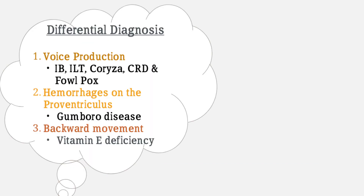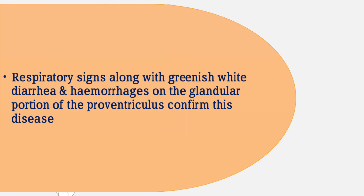Differential diagnosis: egg production drops also occur in infectious bronchitis, infectious laryngotracheitis, coryza, CRD, and fowl pox. Hemorrhages on the proventriculus may also occur in Gumboro disease, and backward head movement can occur in vitamin E deficiency. However, respiratory signs combined with greenish-white diarrhea and hemorrhages on the glandular proventriculus are the unique confirming characteristics of Newcastle disease.